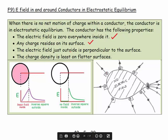The electric field just outside is perpendicular to the surface. We tend to get these field lines going off at perpendicular directions — they may curve when they get further away, but they leave the surface at 90 degrees. If they didn't, there would be a component to the side, which would tend to move the charge to the side. So it makes sense that they are at 90 degrees to the surface.